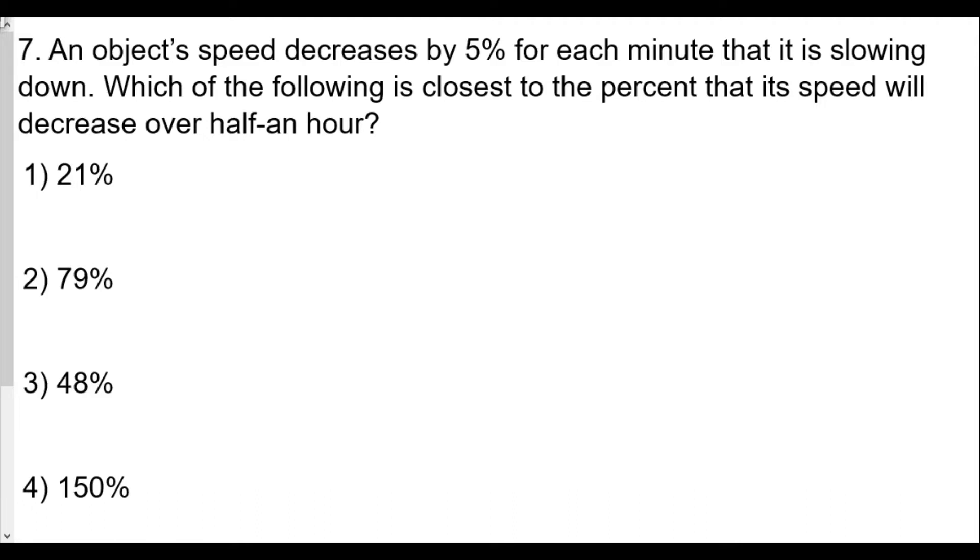Number 7: An object's speed decreases by 5 percent for each minute. Keep in mind decreases by 5 percent - that is slowing down. Which of the following is closest to the percent that its speed will decrease over half an hour?